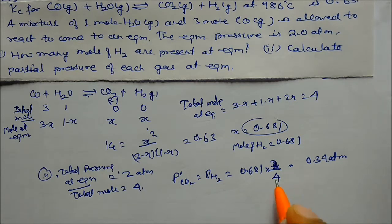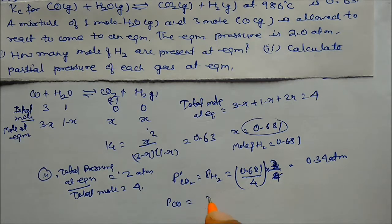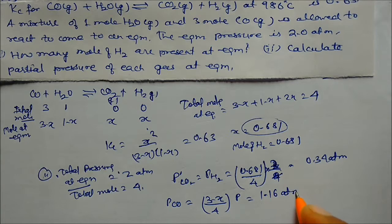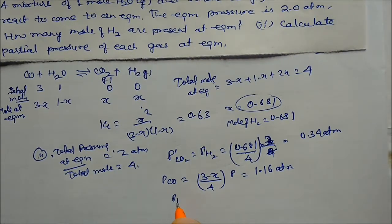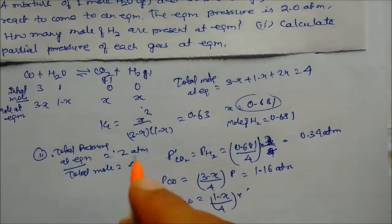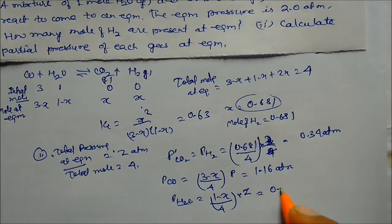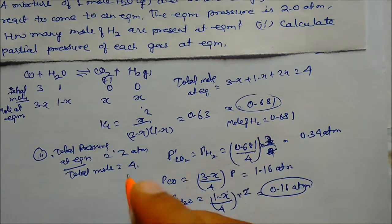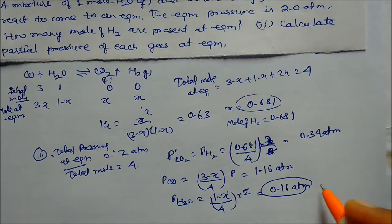Partial pressure of CO = (3 − x)/4 × 2 = (3 − 0.681)/4 × 2 ≈ 1/4 atm. Partial pressure of water = (1 − x)/4 × 2 = (1 − 0.681)/4 × 2 = 0.16 atm.